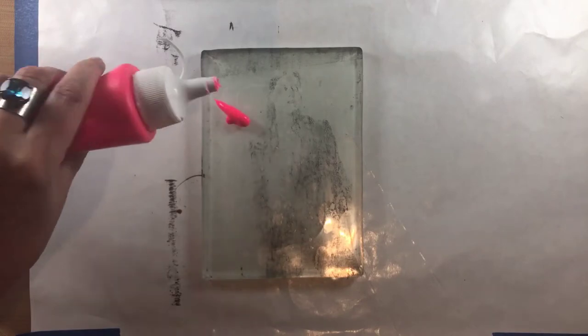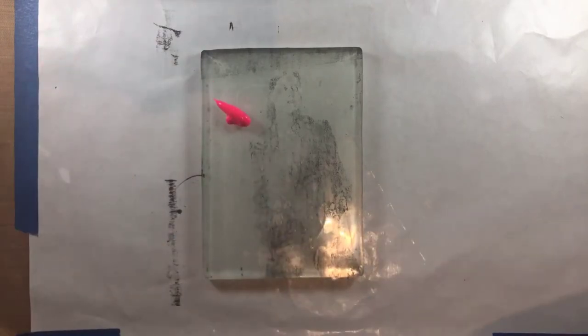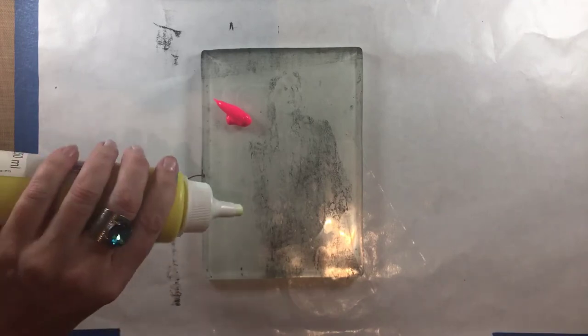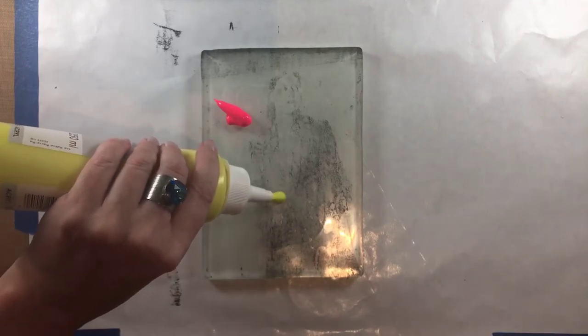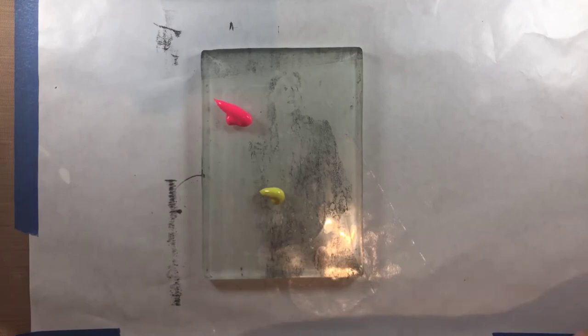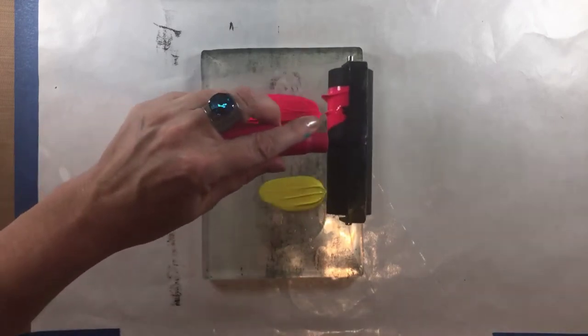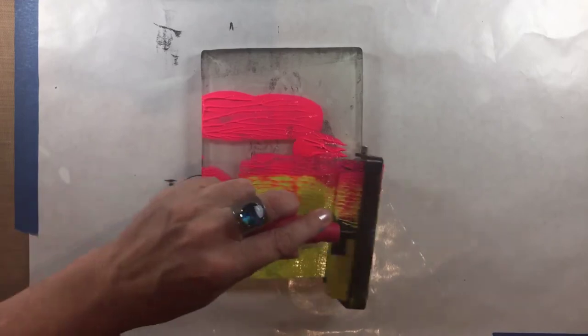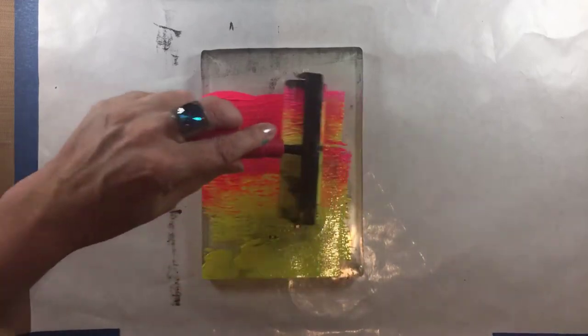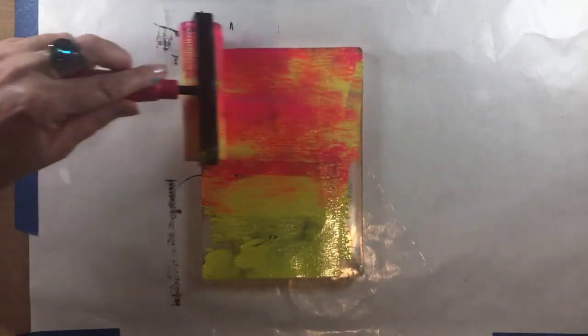So I'm using my Lucas krill paints. These are the fluorescent ones. I happen to love the way this looks. I love a pop art look anyway, but this fluorescent magenta and the fluorescent yellow just really speak to me.